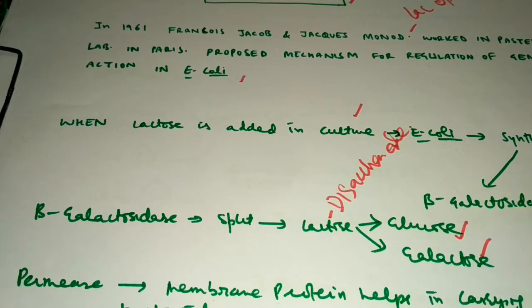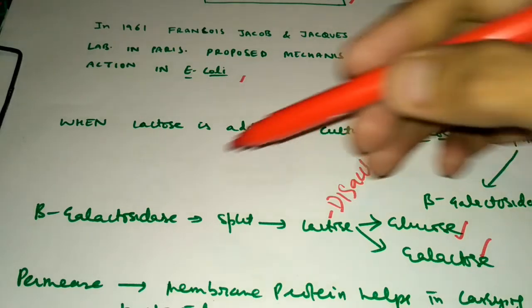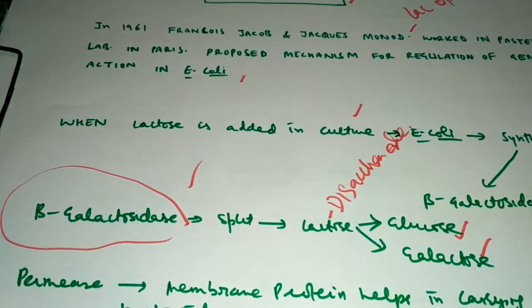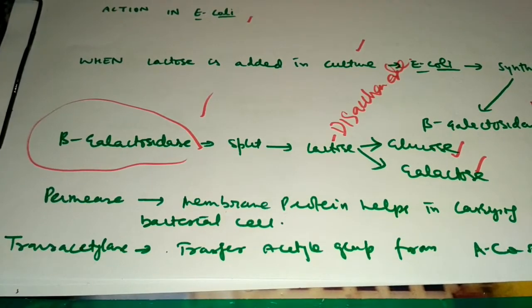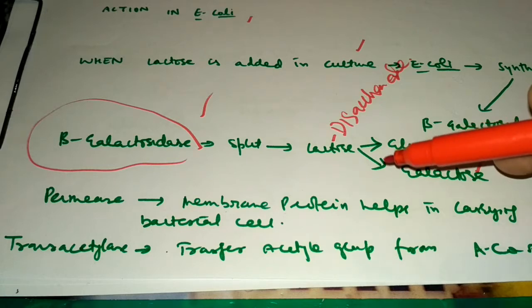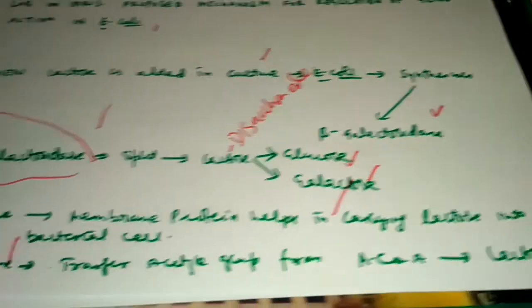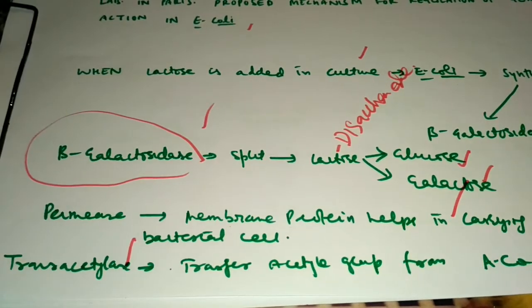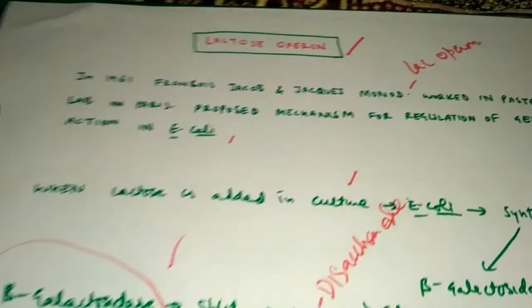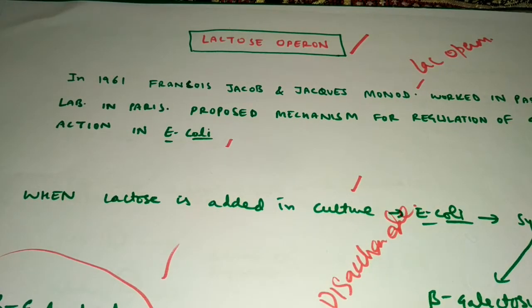When there is no lactose in the medium, no beta-galactosidase is seen in the culture. There are also two other enzymes: permease, which helps in membrane transport of lactose in E. coli, and transacetylase, which transfers the acetyl group from acetyl coenzyme A to the lactose. So three types of enzymes are necessary for the activation and occurrence of the lactose pathway.